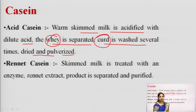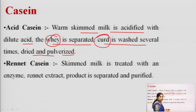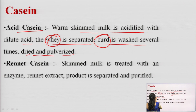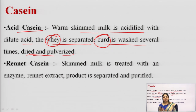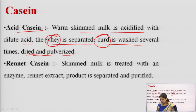That is acid casein — using dilute acid, the precipitate is obtained and then washed, dried, and pulverized. For rennet casein, skimmed milk is treated with an enzyme — a rennet extract is obtained — and then separated and purified. So the two forms of casein are acid casein, prepared using dilute acid, and rennet casein, prepared using enzymes to separate it out.